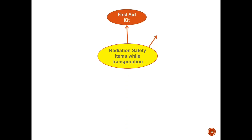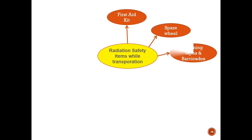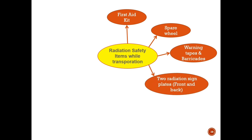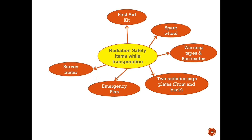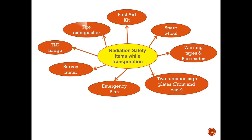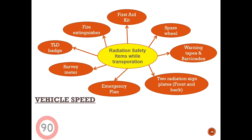Safety items required during transportation include: a first aid kit, spare wheel, warning tapes, battery gates, and two radiation sign plates for the front and back sides of the vehicle. Emergency plan items include a survey meter, TLD badge, and fire extinguisher. The vehicle speed should not be more than 90 km per hour on highways.